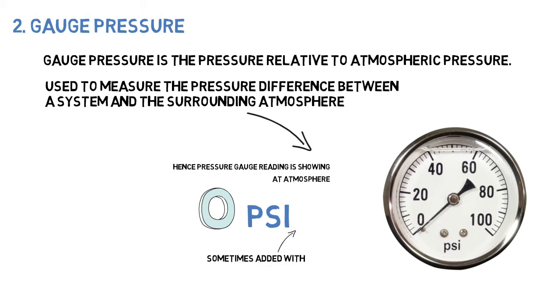Sometimes the pressure unit is added with G at the end to indicate gauge pressure. However, without G, it is understood as gauge pressure.